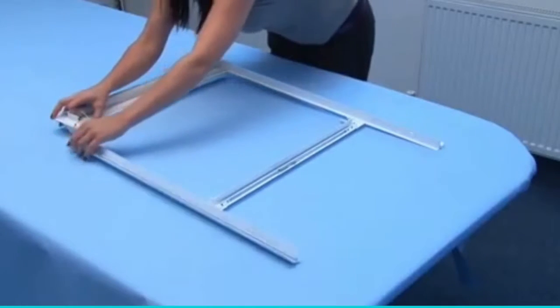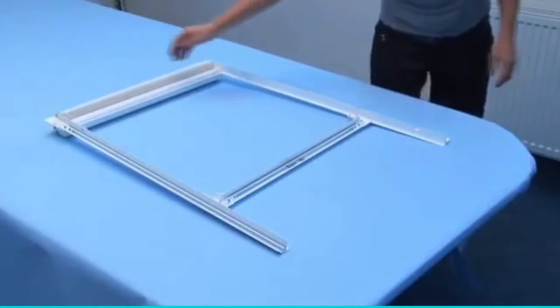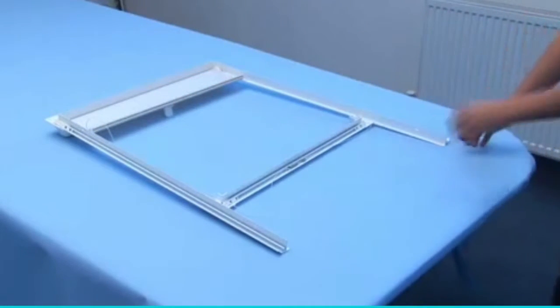Starting from the top right, guide the side frames onto each corner joint, ensuring all cords are free and positioned inside the frame.